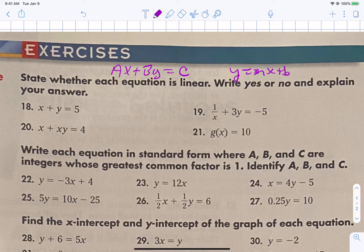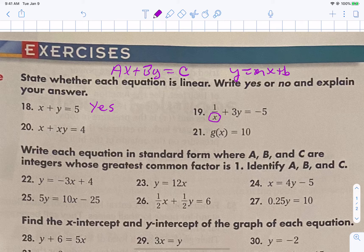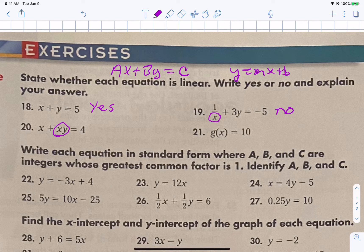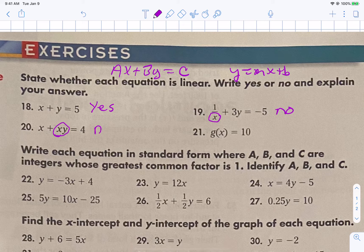You can see 18 is clearly in standard form. The x and the y are both simple, basic x's and y's. The problem with 19 is this piece right here. We can't divide by an x or a y, so that would be a no. The problem with 20 is this piece right here. The x's and y's can't multiply together, so that's a no.